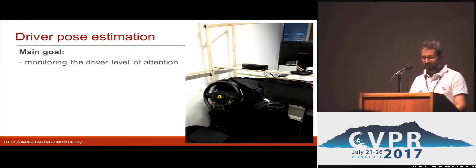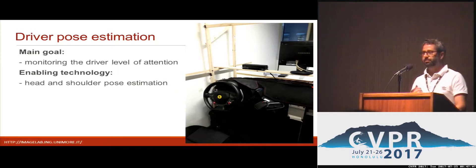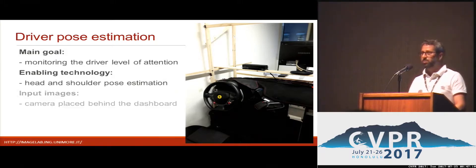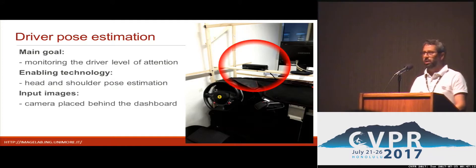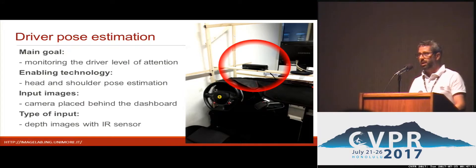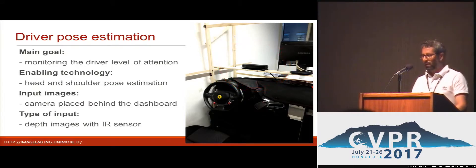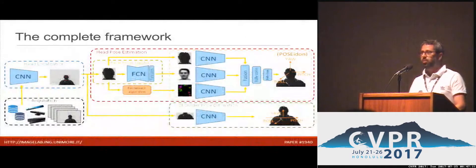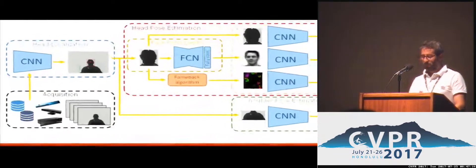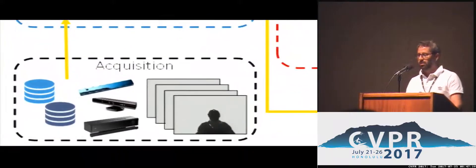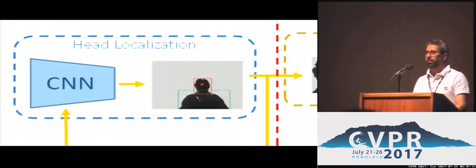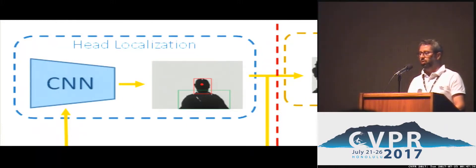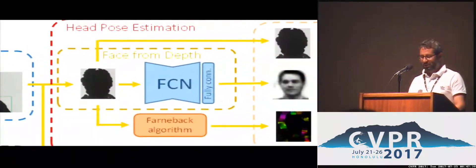As a first step, we show the estimation of the head and shoulder poses. A camera is placed behind the dashboard, and to be able to work also during the night, we prefer to use an infrared depth camera. The input frames are acquired by the depth sensor and then fed to the first network for head localization and to crop the head around the center.